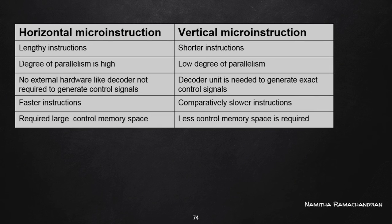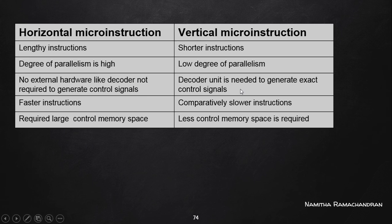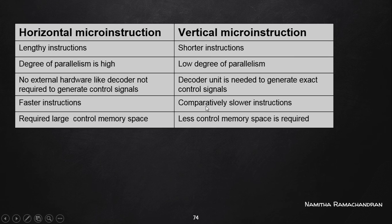Comparing the properties: horizontal micro instructions are lengthy, while vertical micro instructions are short. Degree of parallelism is high for horizontal and low for vertical — maximum one control signal activated at a time. Horizontal micro instructions require no external hardware to generate control signals, but vertical micro instructions require a decoder unit to identify which control signal to activate. Horizontal instructions are faster; vertical instructions are slower due to the decoding step.